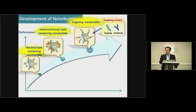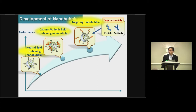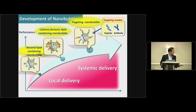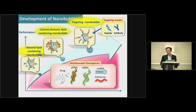So far, we have developed several different types of nanobubbles. For example, neutral lipid-containing nanobubbles and also cationic or anionic lipid-containing nanobubbles. These are useful for local or systemic delivery of multi-modal therapeutics.